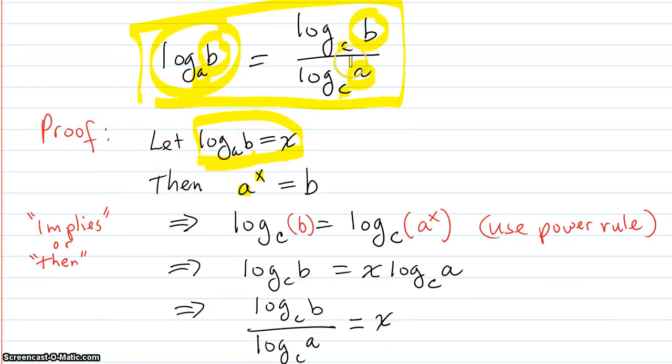Then I'm just going to write down this part up here, log base c of b. Well, the b is sitting right here. But that b is equal to a to the x. So I'm going to substitute it into this statement: log base c of a to the x, because b is a to the x.